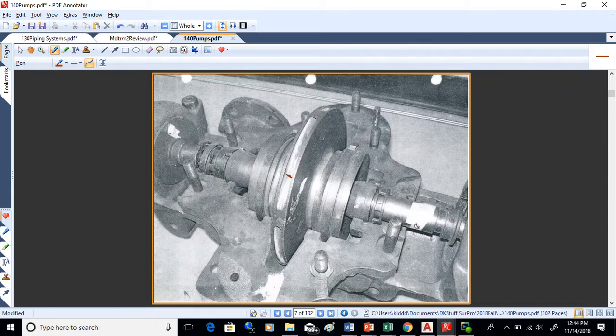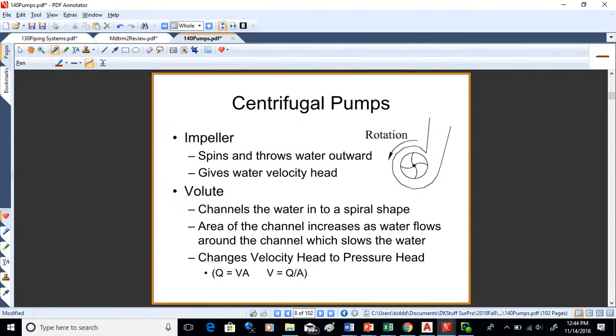What the impeller does is spin and throw the water outwards. That's the impeller - you can see the shape, and it rotates to throw the water outwards. What the volute does is channel the water and give it a place to go. Notice that the volute is increasing in size as you work your way around.